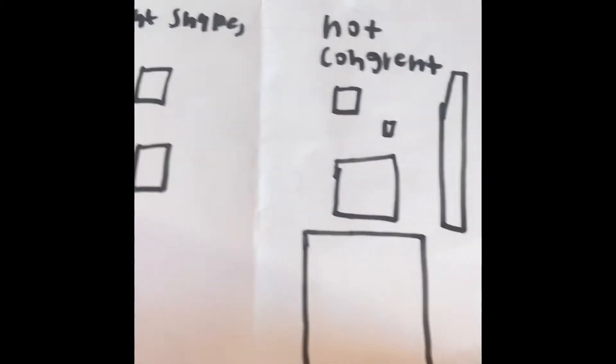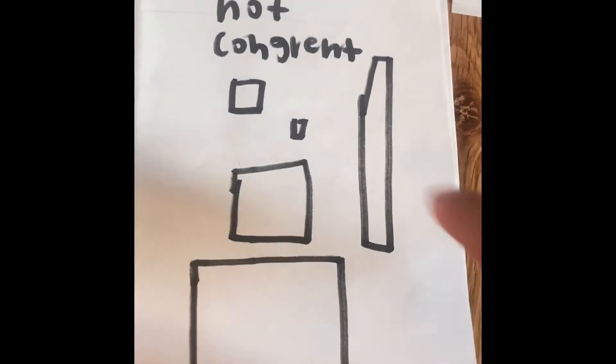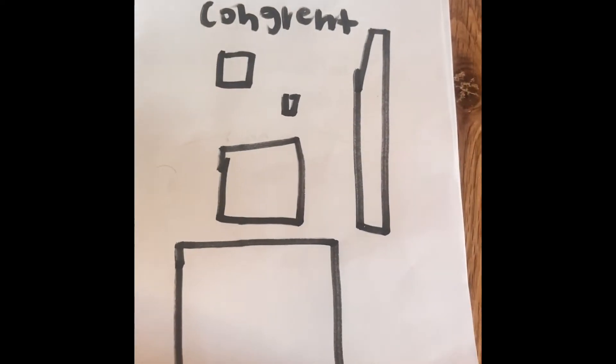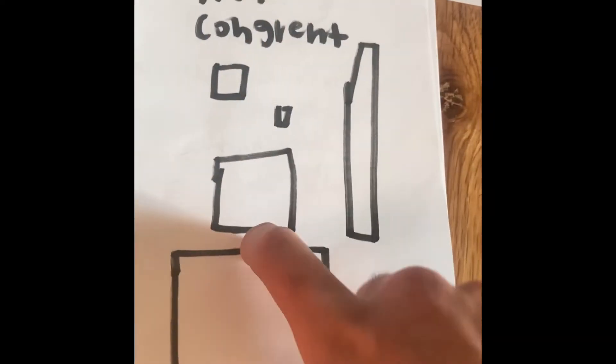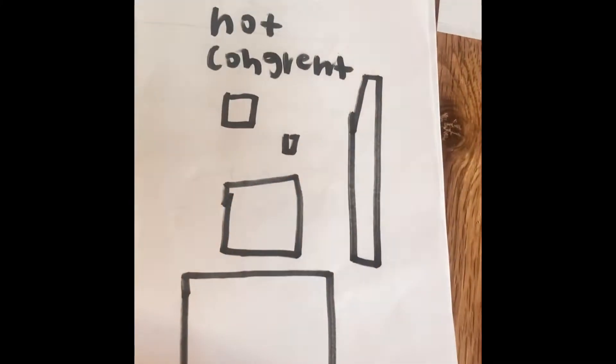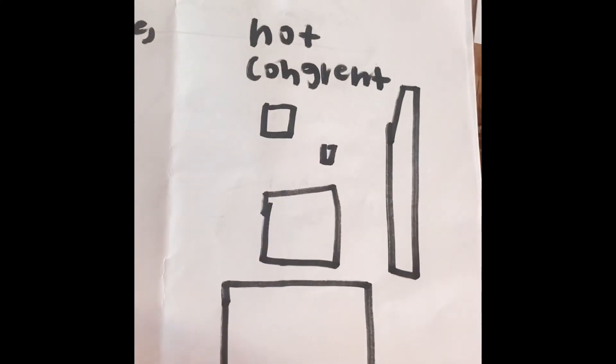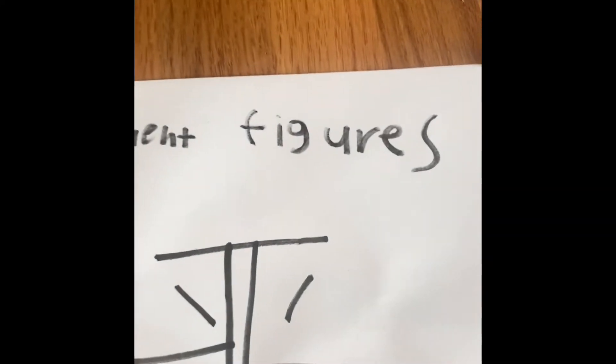These ones are not congruent because even though they may be the same shape, we have different sizes by length and by area. So that's why this is not congruent. Wait, what are congruent figures?